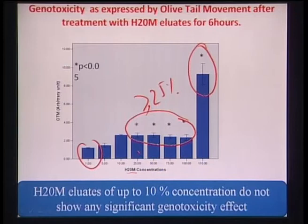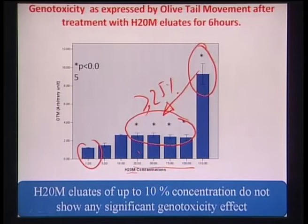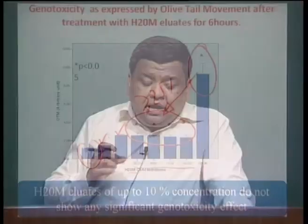From 25% or more, OTM values are much less compared to the positive control. At 5% and 10%, the olive tail moment was also measured, and these are not significantly different compared to the negative control. The key point is that whenever you put a material or inject drugs or particles inside the human body, they will cause some damage at the gene level. Your task is to understand whether the gene-level toxicity is statistically significant compared to the control specimen.